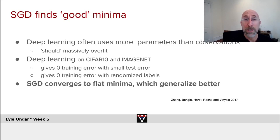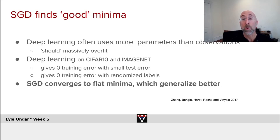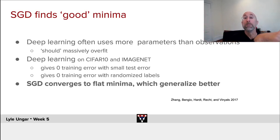Pretty much everyone in deep learning does both weight penalties like L2 and L1 and early stopping to make the weights smaller. But stochastic gradient descent has another less obvious property. People tend to use large neural nets that could and maybe should overfit — they can train to almost zero training error with very small testing error. The magic of stochastic gradient descent is that it tends to converge to relatively shallow, flat minima in the loss function, which tend to generalize better.